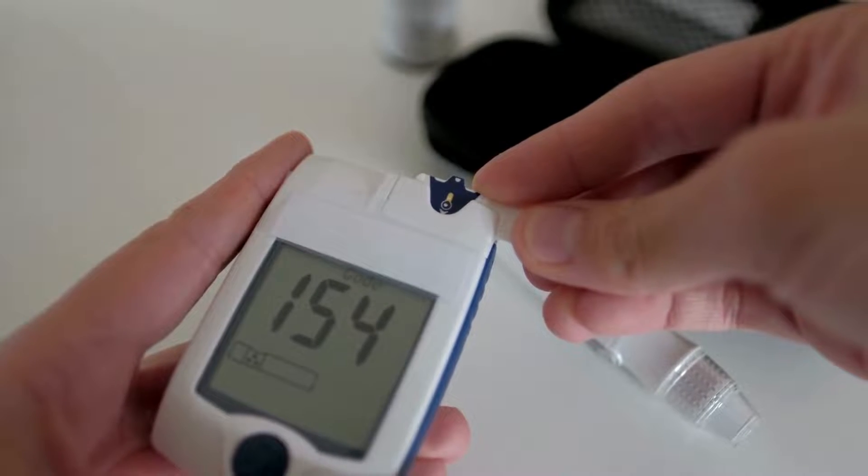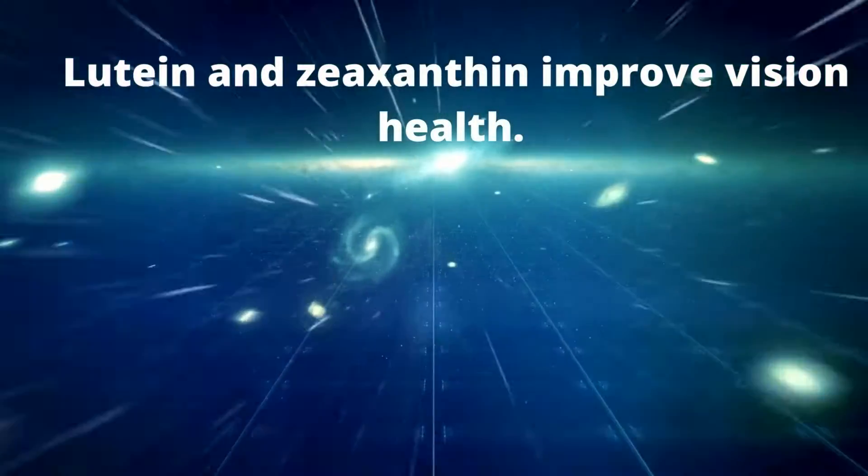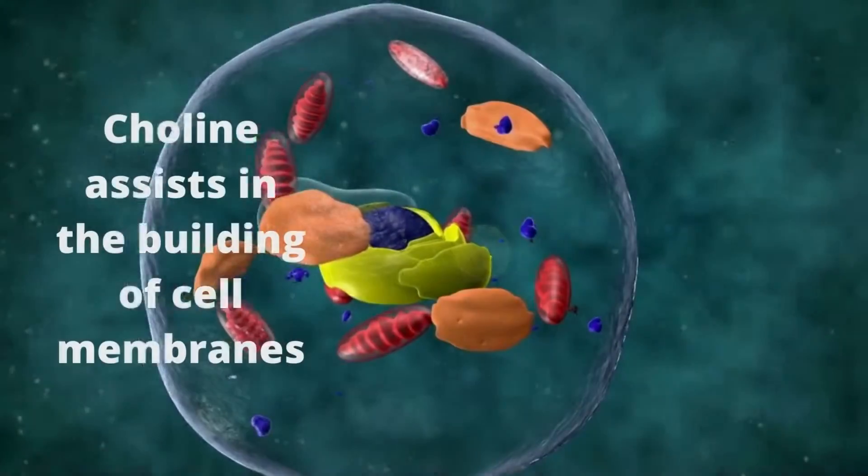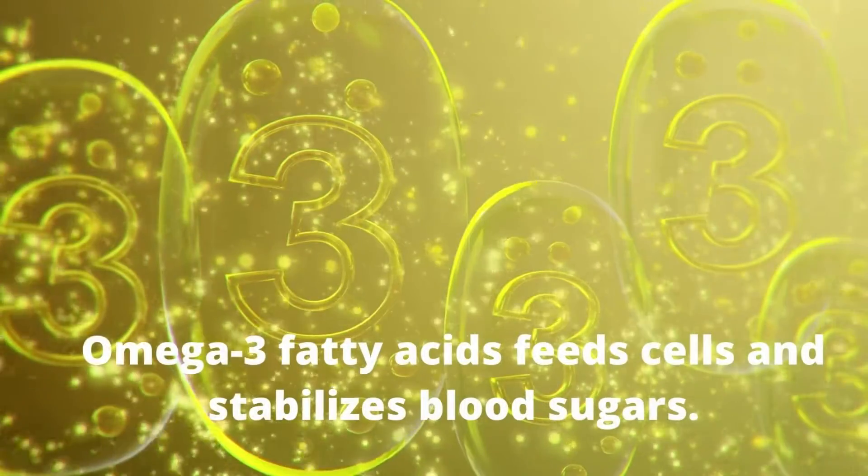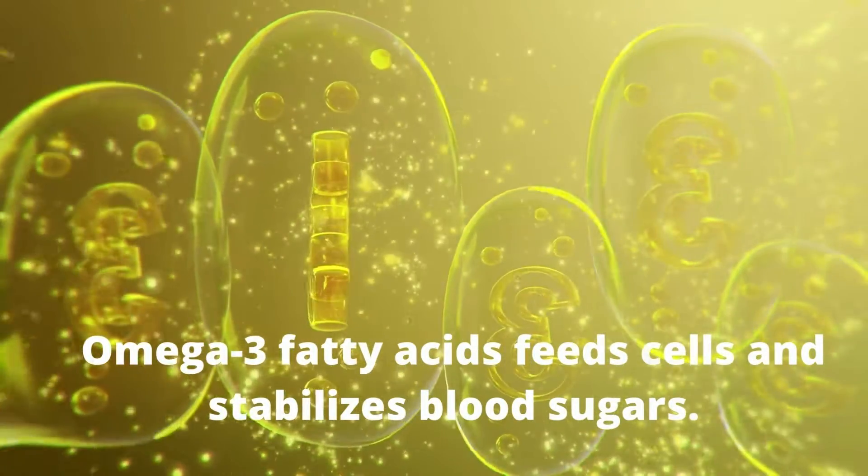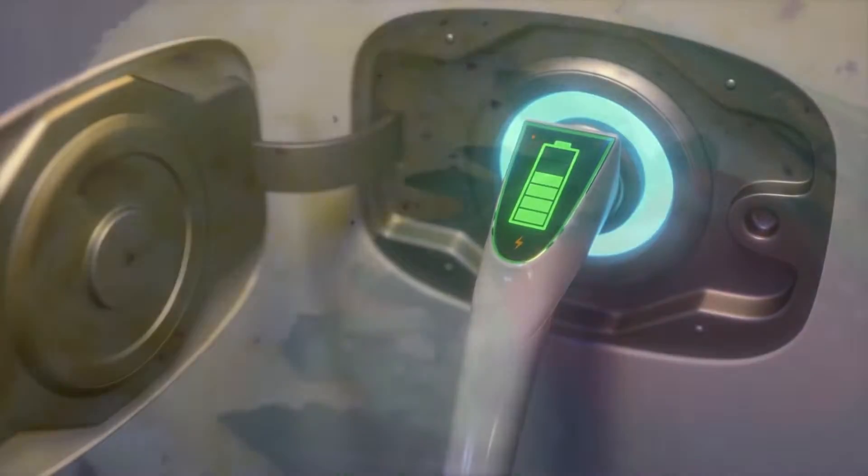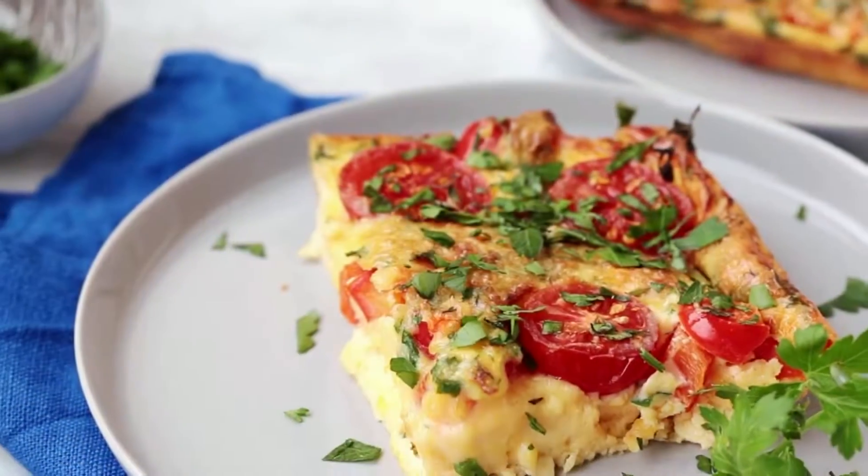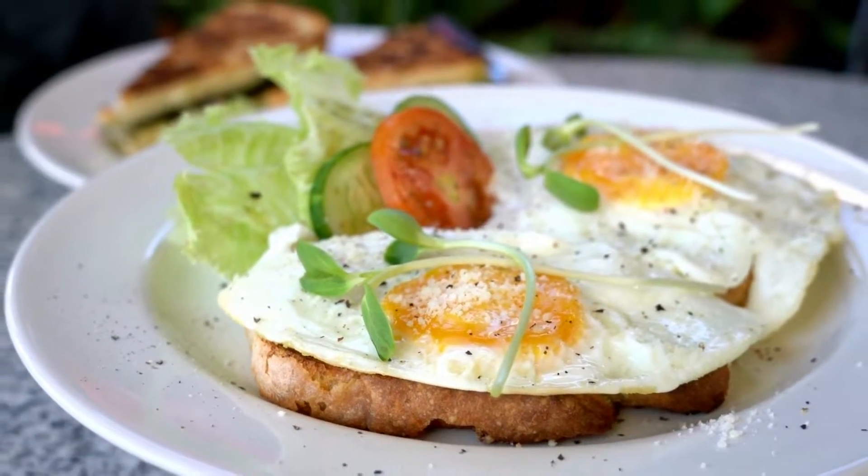Eggs benefits do not stop there for those with diabetes. Lutein and zeaxanthin participate in vision health. Choline assists in the building of cell membranes. Omega-3 fatty acids feed cells and stabilize blood sugars and are a complete protein to keep you fuller for longer. Have them in omelets, frittatas, scrambled or fried. How do you like yours?